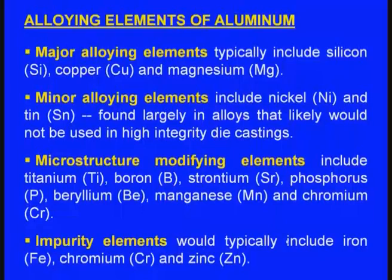The impurity elements typically include iron, chromium and zinc. Iron is the most common impurity element in aluminum, next is chromium and also zinc. So these are the four types of additives we can see in aluminum castings: major alloying elements, minor alloying elements, microstructure modifying elements, and impurity elements.